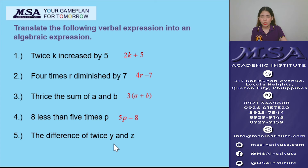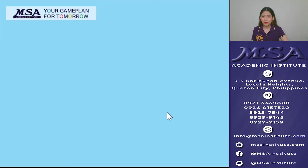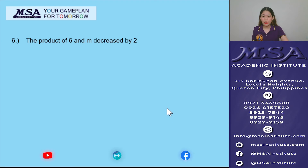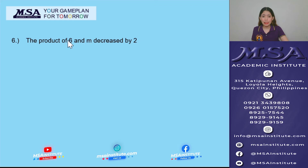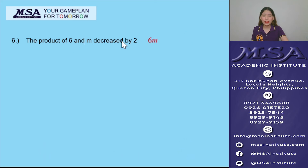The translation for problem 5 is 2y minus z. Number 6: 'The product of 6 and m, decreased by 2.' The product of 6 and m is 6m, and decreased by 2 is minus 2. So the translation is 6m minus 2.